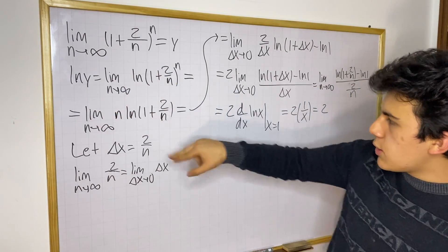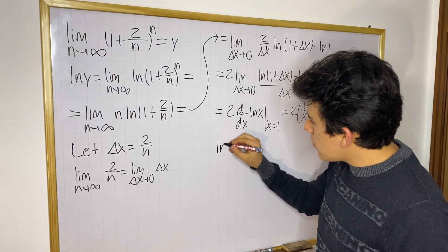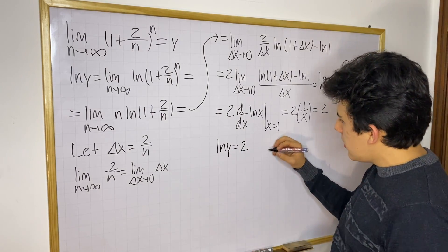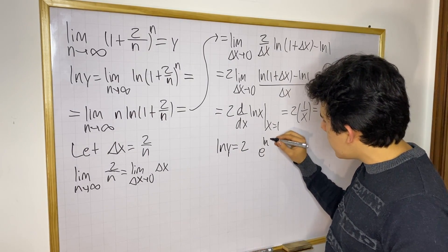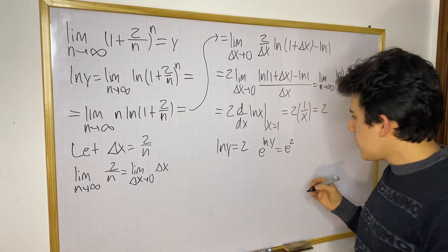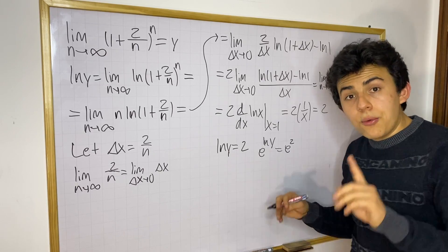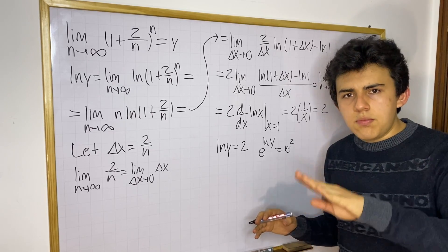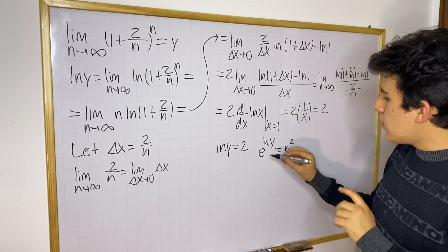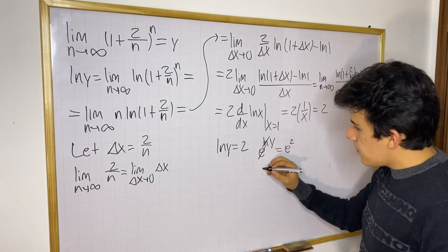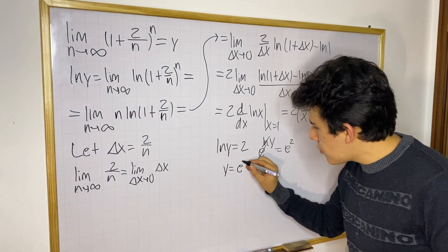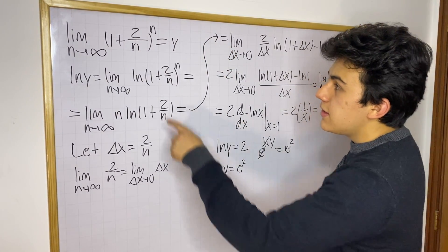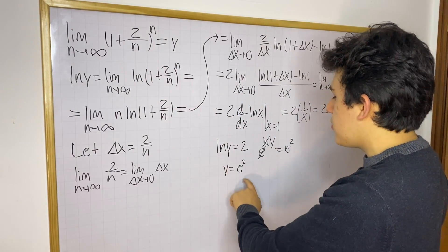So we just found that ln(y) equals 2. Remember, we started with ln(y). To cancel out ln and get y, we write e^(ln y) = e², and since e and ln cancel out, we get y = e². And since y equals that original limit, the limit therefore equals e².